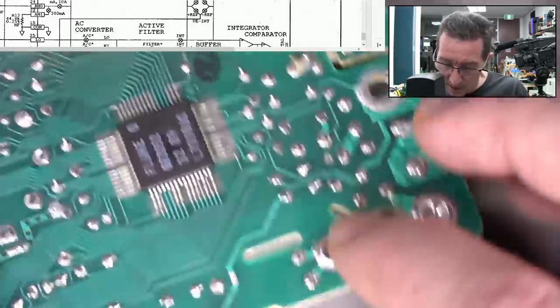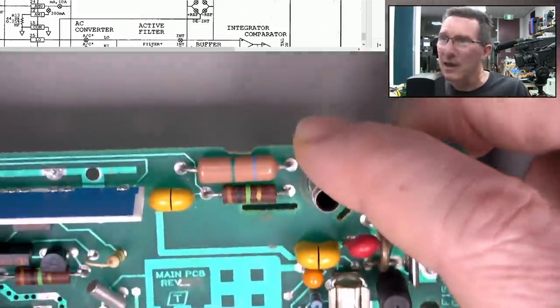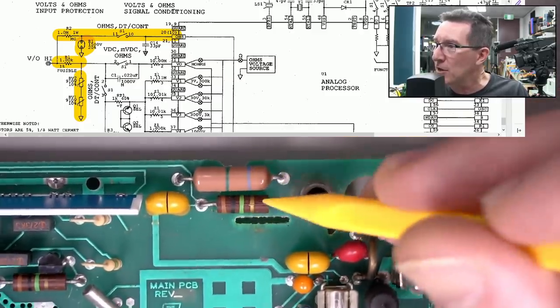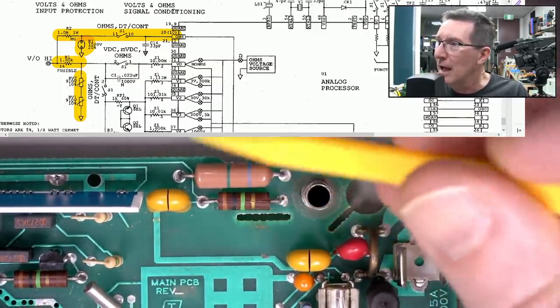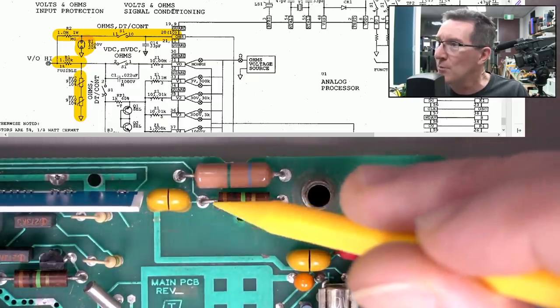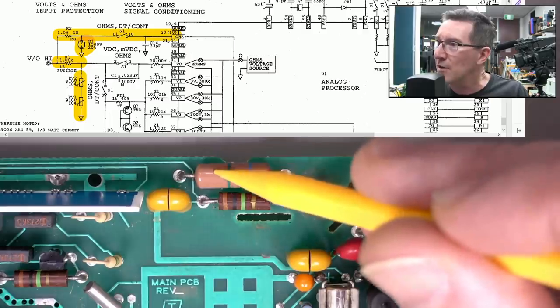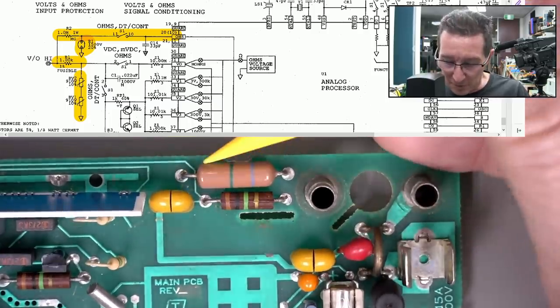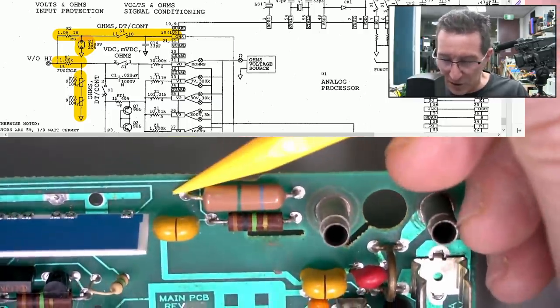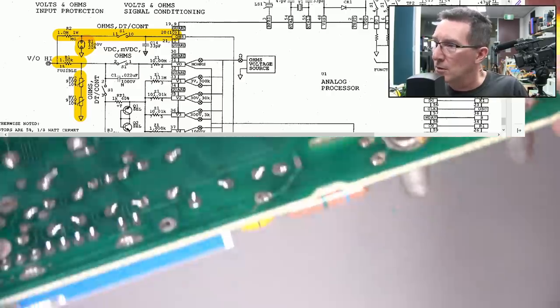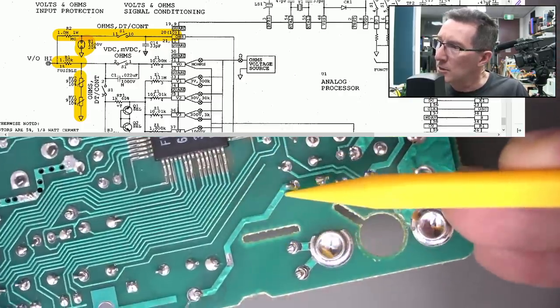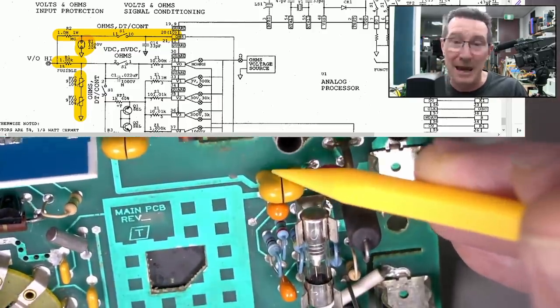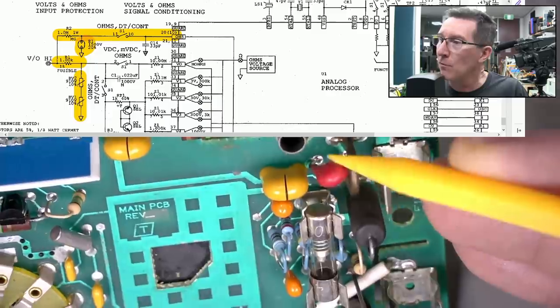We've got a 1K fusible resistor here. There's our input. So it goes to both of those. There are our two different paths there. There's your 1 meg. So that's your ohms path, right? Here's our two paths. So this 1 meg is the upper part. This is the ohms. So that's the 1 meg input. And then this one is our 1K fusible thing here.